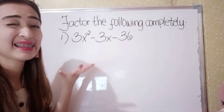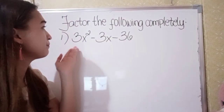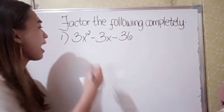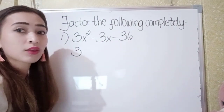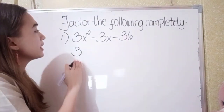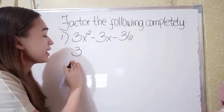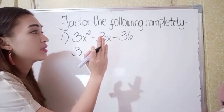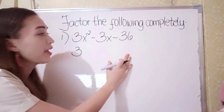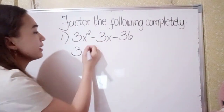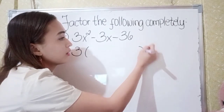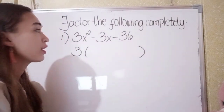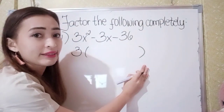What is the number that can divide 3, 3, and 36? We have 3, because 3 can divide 3, 3 can also divide 3, and 3 can divide 36. So next is to group the factors.